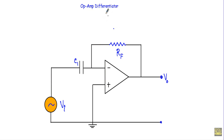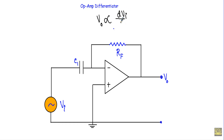In this video I will show you the operation of an operational amplifier differentiator circuit. The differentiator circuit performs mathematical differentiation, meaning the output voltage will be directly proportional to the first derivative of the input voltage. Mathematically, VO is proportional to d(VI)/dt.